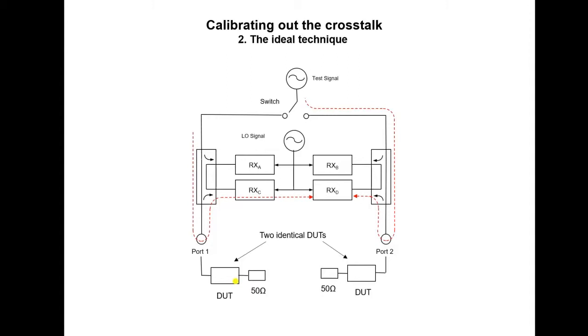The idea is that the impedance, or return loss you present to ports 1 and 2 during calibration, is the same as during the measurement. The idea can work very well, but it is not always practical to have two identical DUTs.